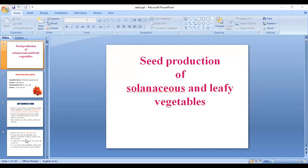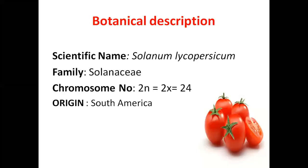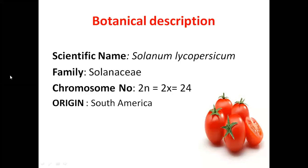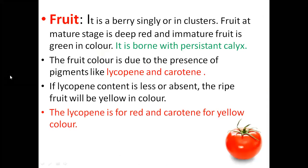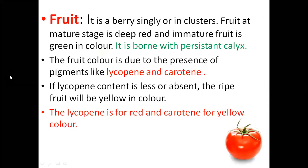Now we will start the topic of seed production of Solanaceae crops. We all know the scientific name and chromosome number. Tomato has a tap root system — that is a new point worth remembering. Common things are in the notes.